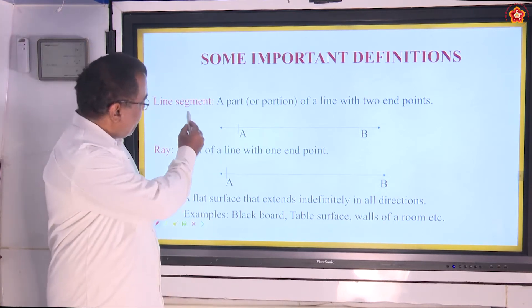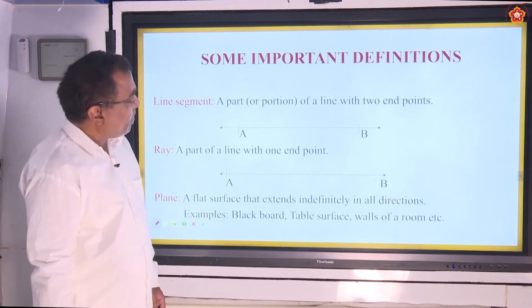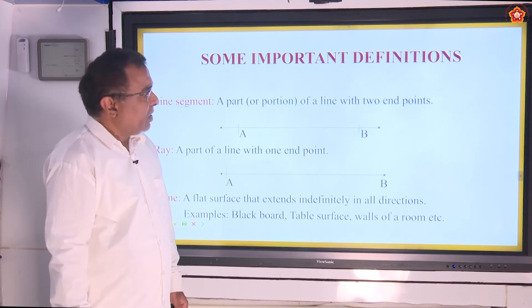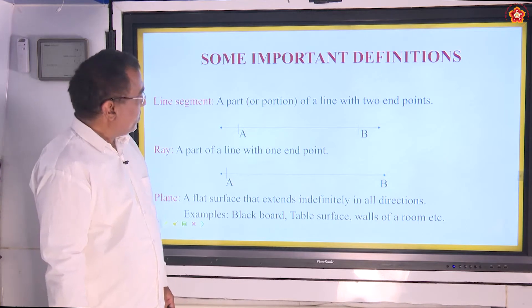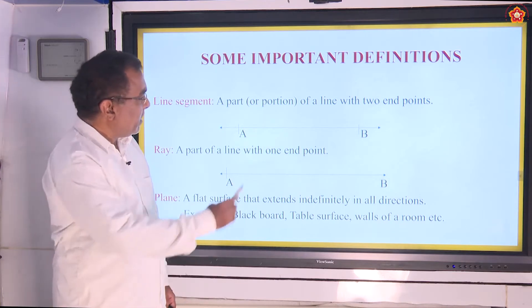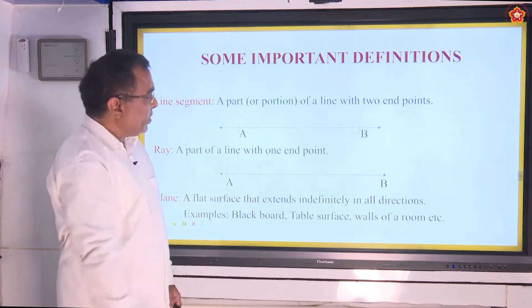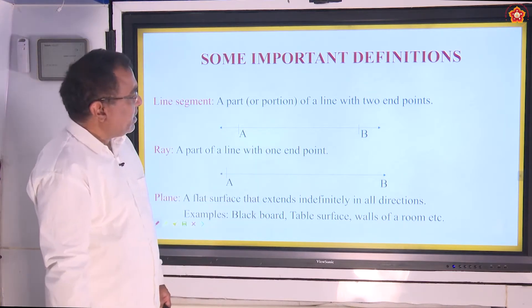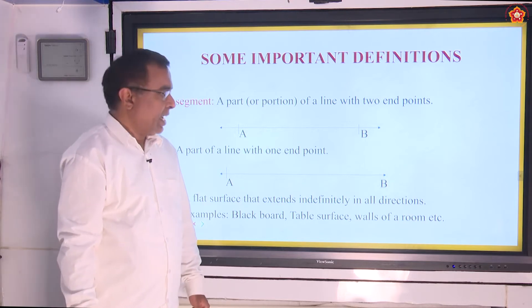Line segment: it is a part or portion of a line with two endpoints. So, a line segment will have two endpoints and it is a part or portion of a line.